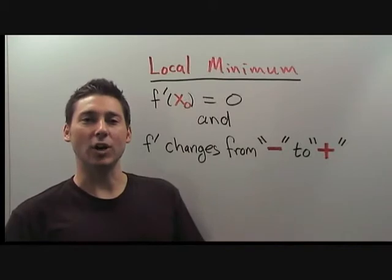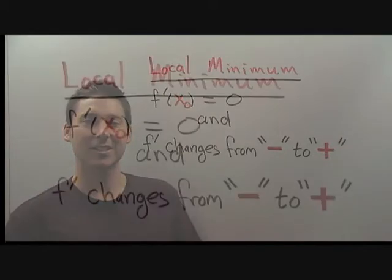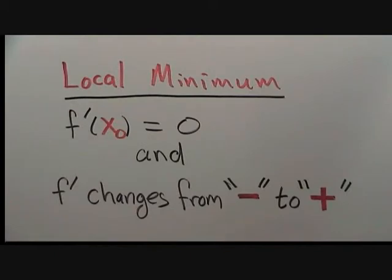Let's remind ourselves of what it means for the function f to have a local minimum. The function f will have a local minimum at a point x0 if the derivative f' is equal to 0 and the derivative changes sign from negative values to positive values at x0.